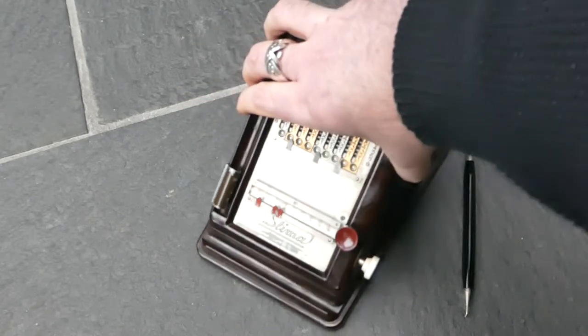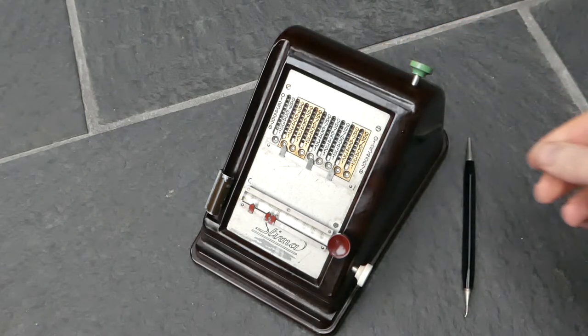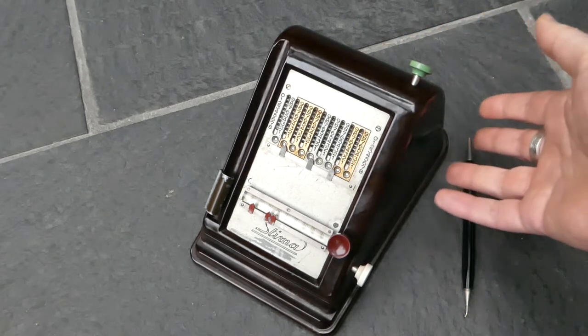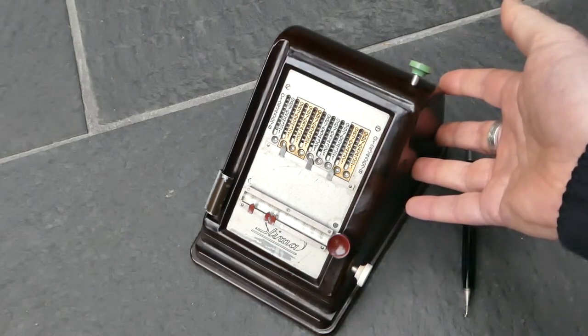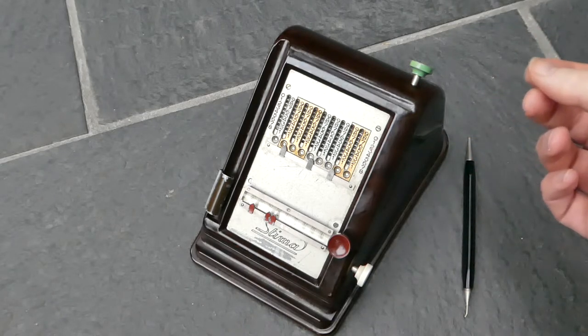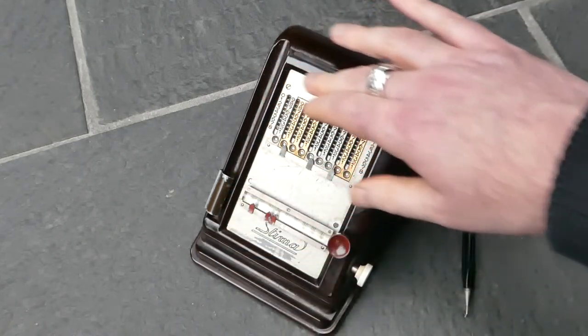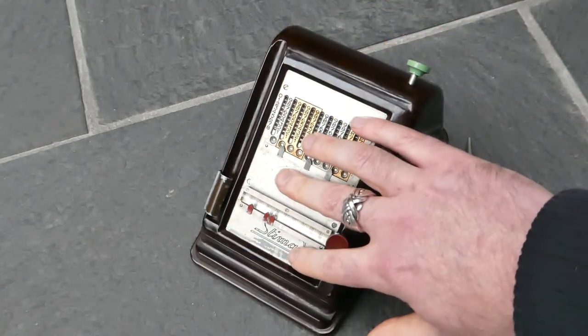This model is called the CM3. The C means that it has this Bakelite case. It's intended for desktop use. And the other models without that C designation didn't have the case and just consisted of this metal rectangular slab.